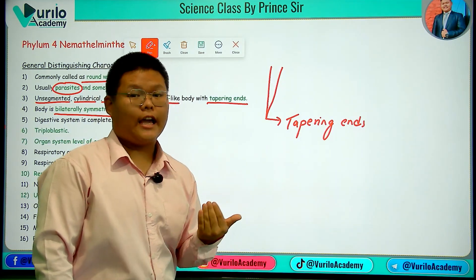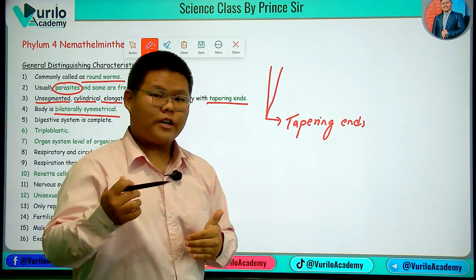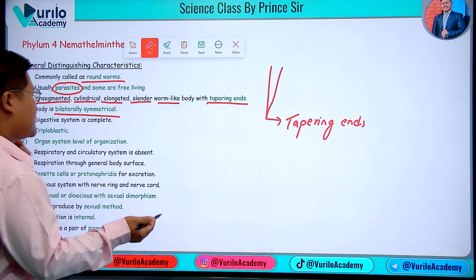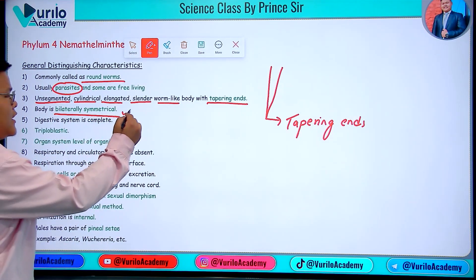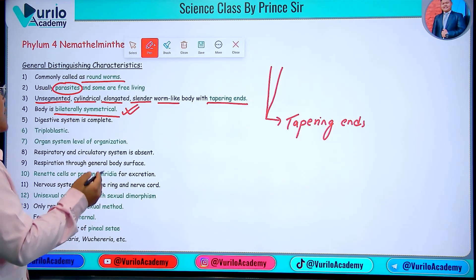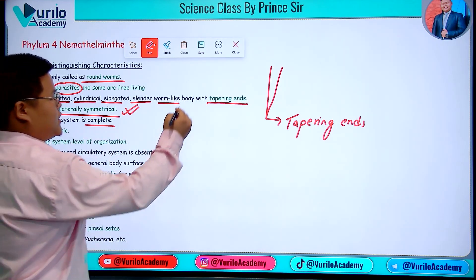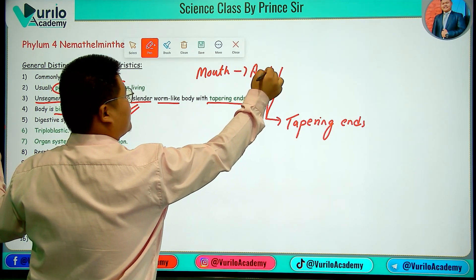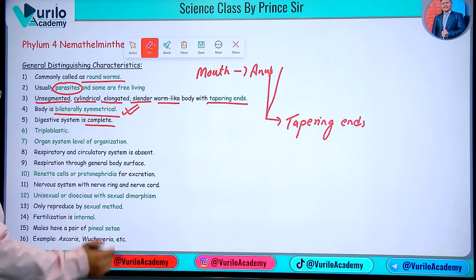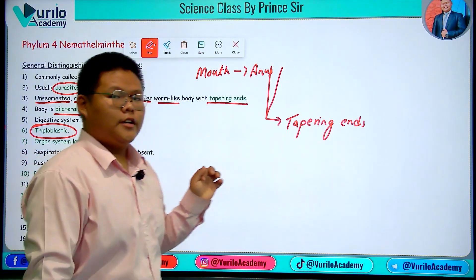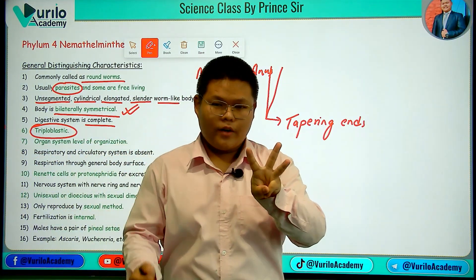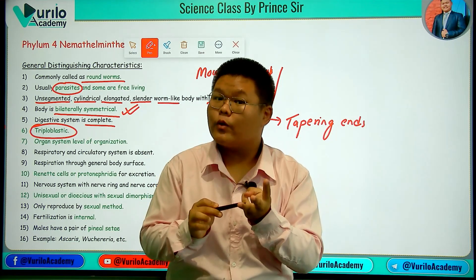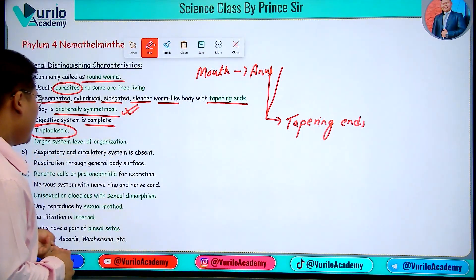The basic concept of symmetry has already been discussed in the previous lecture. The digestive system is complete — meaning it starts at the mouth and ends at the anus. They are triploblastic, which is an important point to remember. There are three germ layers: ectoderm, mesoderm, and endoderm.